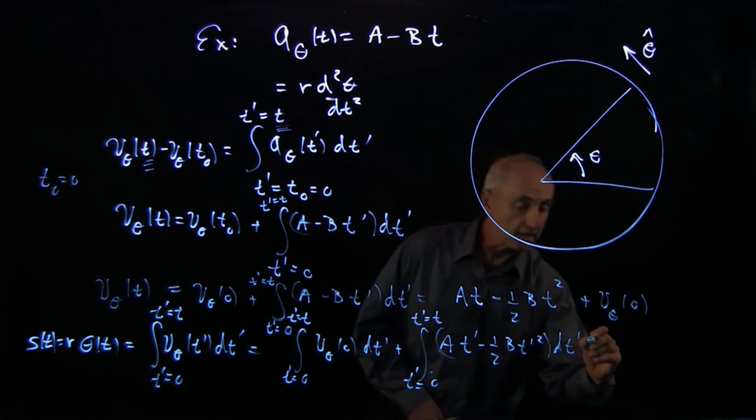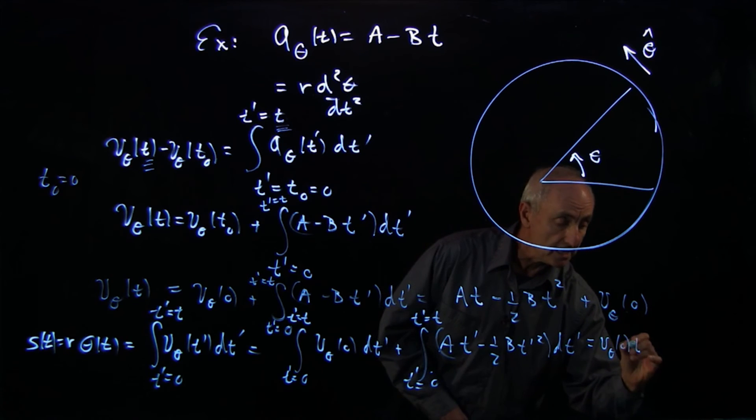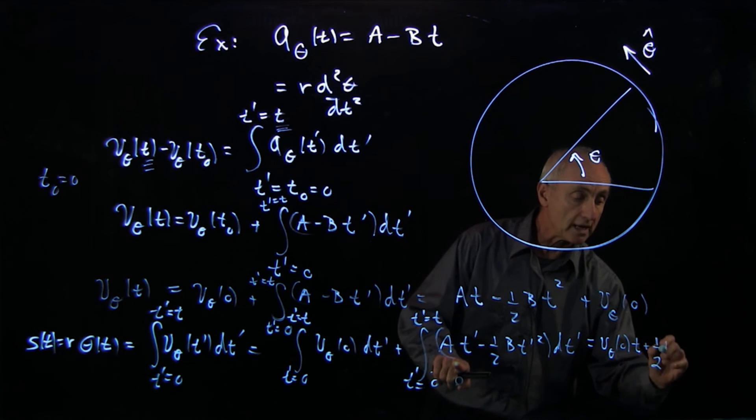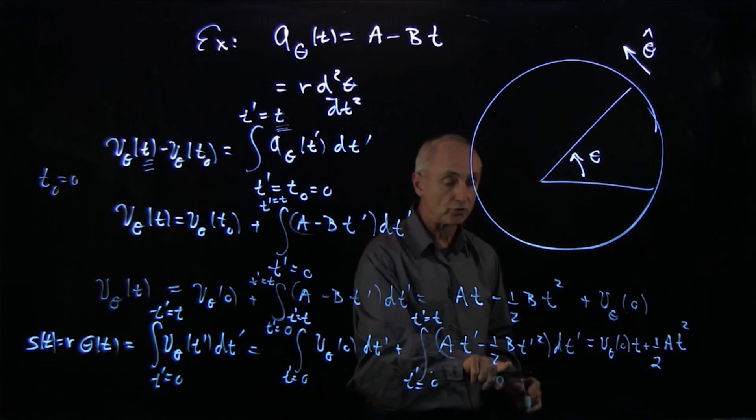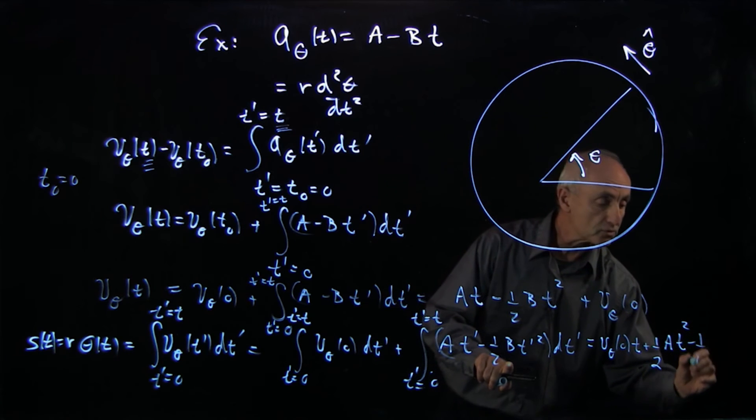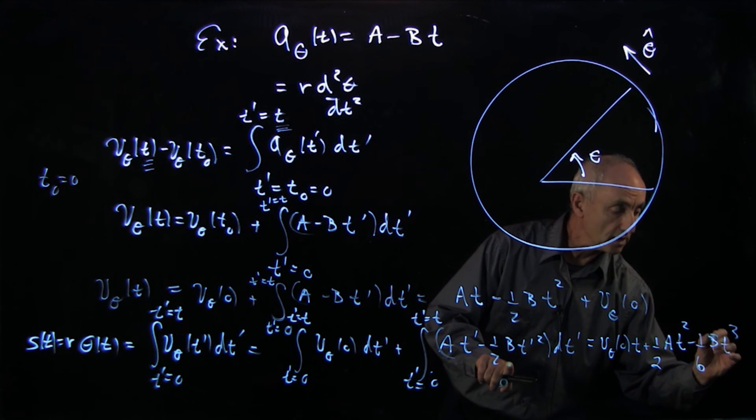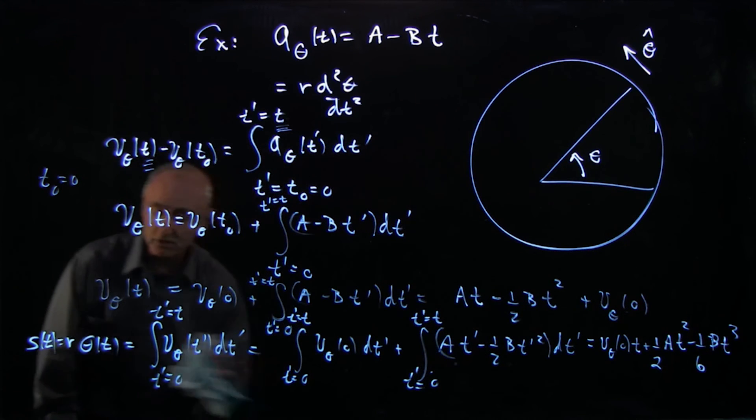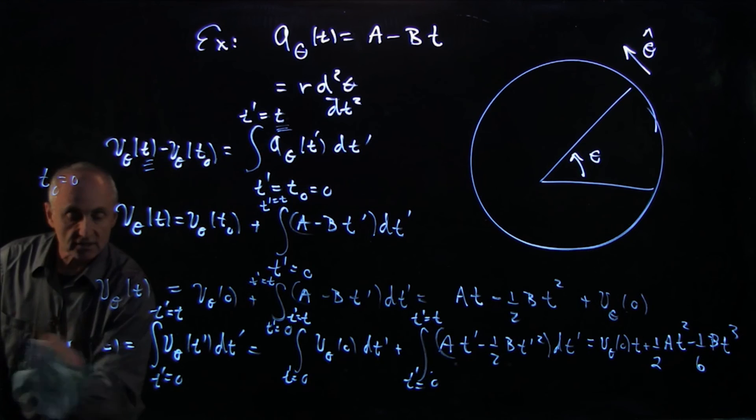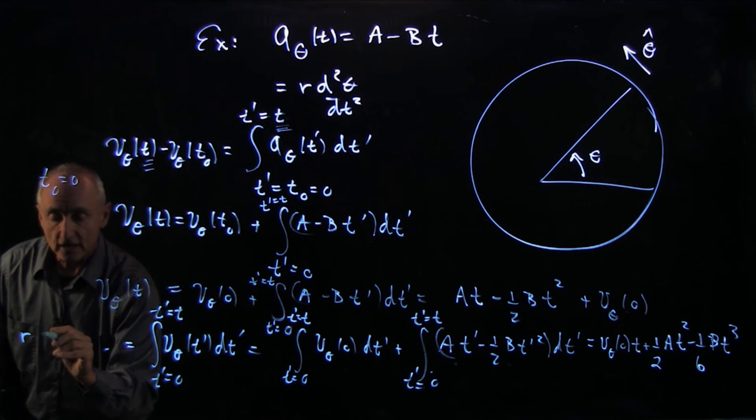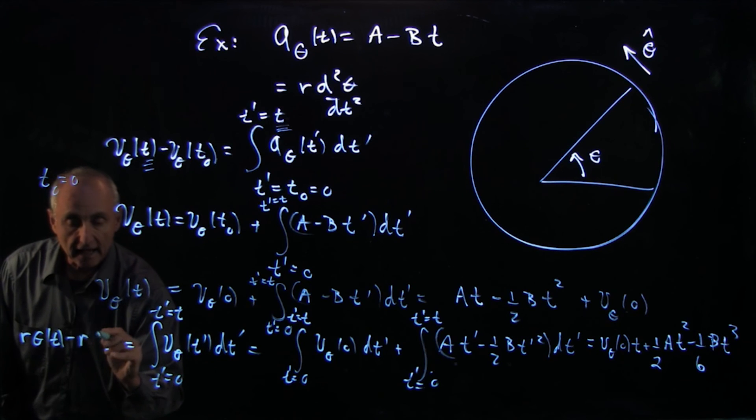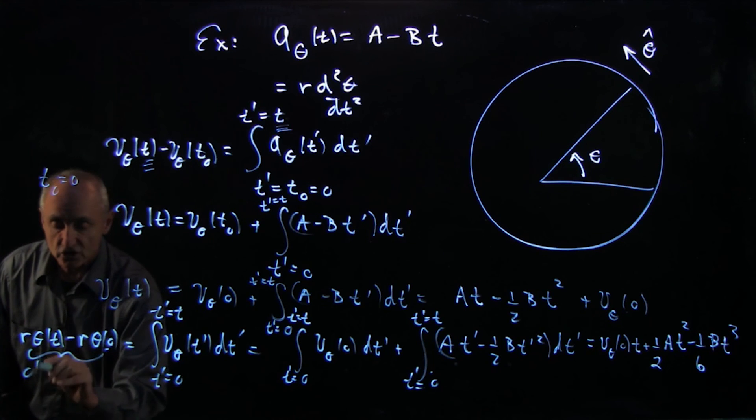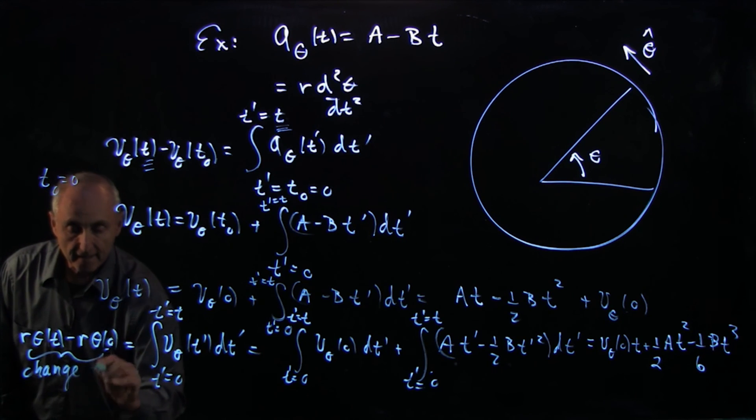And what I get is v_θ0·t, the result of the first integral. The result of the second integral is 1/2 At². And the result of the third integral is minus 1/6 Bt³. And that gives me this. I have to be a little careful on this side. It's how much has the arc length changed as we go from time 0 to time t. So that's the change in arc length.